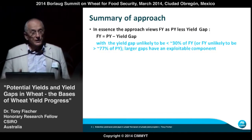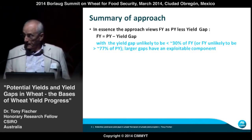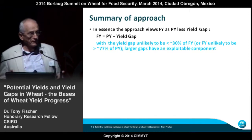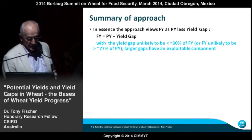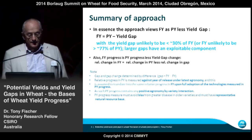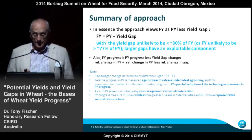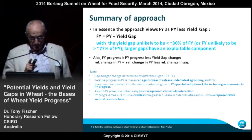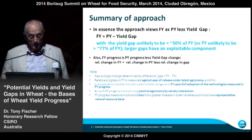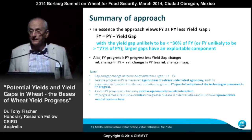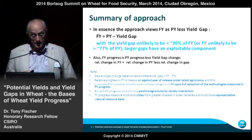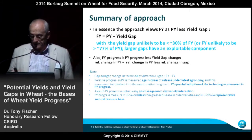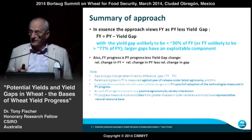In summary, this approach views farm yield as potential yield less the yield gap, bearing in mind that farm yield is unlikely to be more than about 77% of potential yield because it doesn't make economic sense for a risk-averse farmer to push for very high yields. If we have larger gaps, we have what we call an exploitable gap. Farm yield progress is the rate of farm yield change — therefore the rate of potential yield change less the change in yield gap. The relative progress in potential yield is measured against the year of release with the latest agronomy.